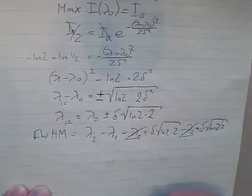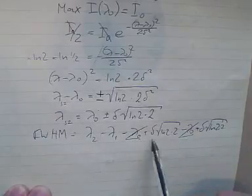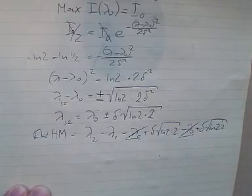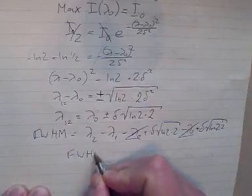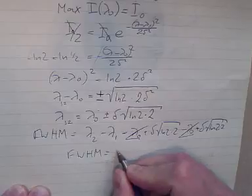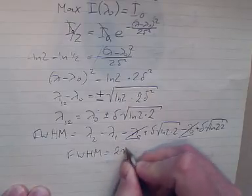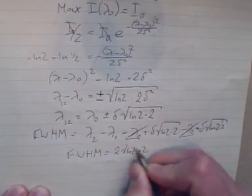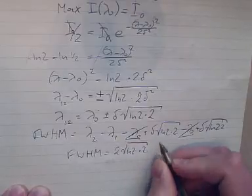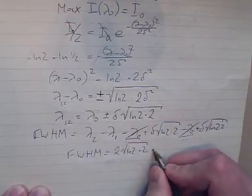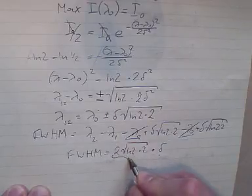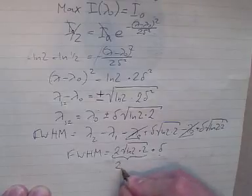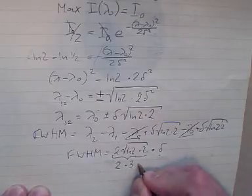The lambda zeros cancel out, so the full width at half maximum relationship to delta doesn't depend on the actual wavelength. We'll end up with the full width at half maximum being 2 times delta times square root of ln(2) times 2. If you put that in the calculator, you'll see that this term is roughly 2.35.